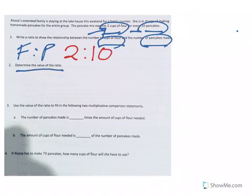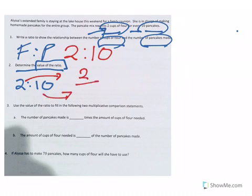Write a ratio to show the relationship between the number of cups of flour and the number of pancakes made. So our pancake ratio here is going to be cups of flour to pancakes made. If I go back up here, we're looking at two cups of flour for every ten pancakes. So our ratio then would be two to ten. Okay. Determine the value of the ratio. Oh, okay. Value. When we're looking at the value of a ratio, we're looking at a fraction. So if we have two cups of flour to ten pancakes, we know this now becomes our numerator. This becomes our denominator. We have two tenths. That is the value of that ratio. Two cups of flour to ten pancakes made.